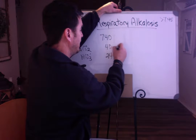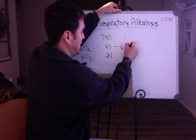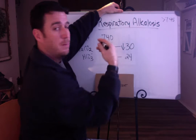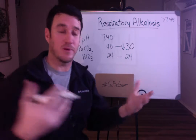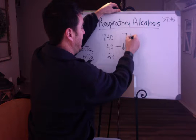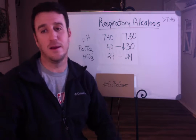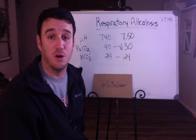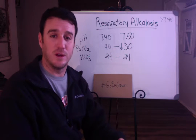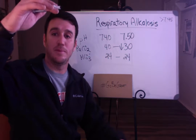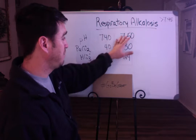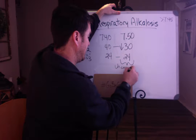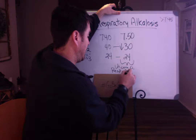If your CO2 goes down — let's say to 30 — and your bicarb stays the same at 24, then your pH is going to go up. We'll say it goes to 7.50. Henderson-Hasselbalch may put it slightly different, but it's going to be close. CO2 goes down, pH goes up. We're going to call this blood gas an uncompensated respiratory alkalosis.